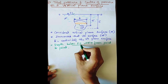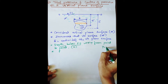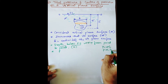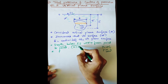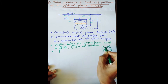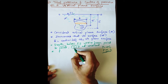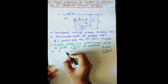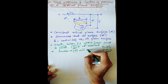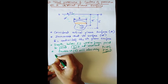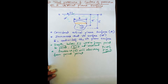As depth varies — that is, h varies — the pressure also varies, because from the hydrostatic law, p = w·h, so pressure is directly proportional to h. Since h is not constant for a vertical plane surface but varies from point to point, the pressure p will also vary from point to point on this vertical plane surface.